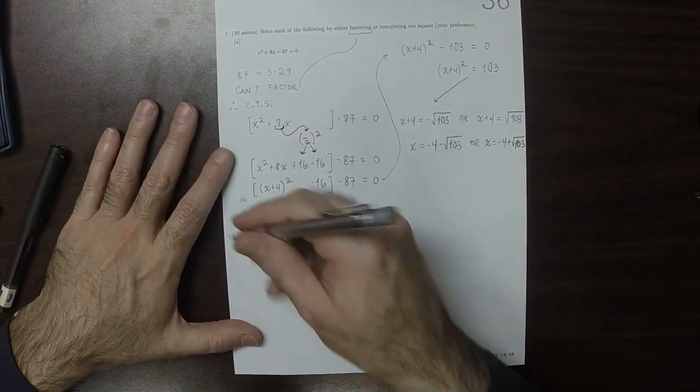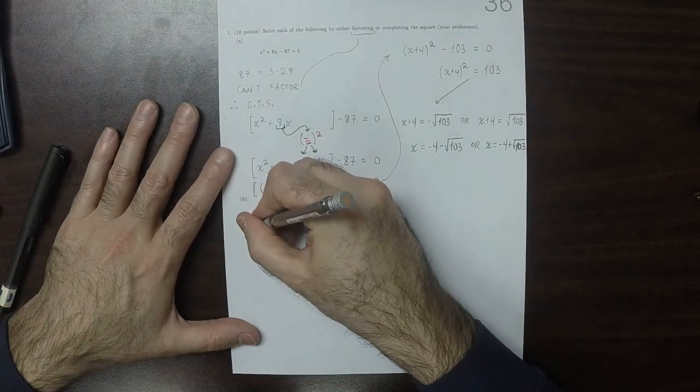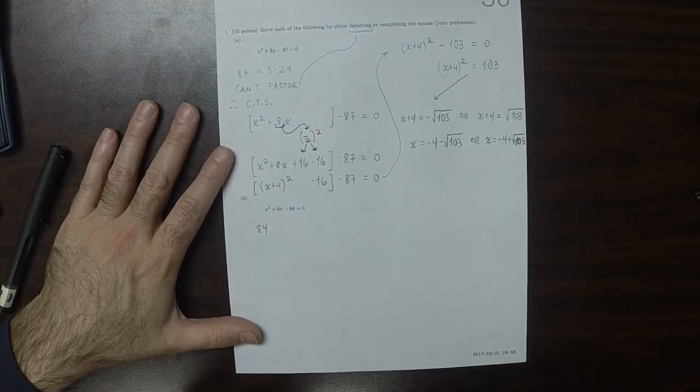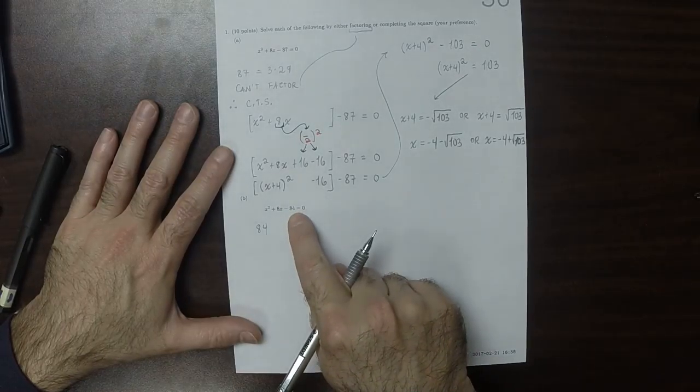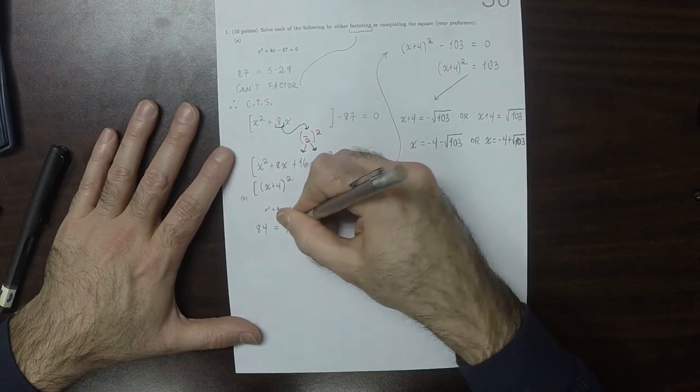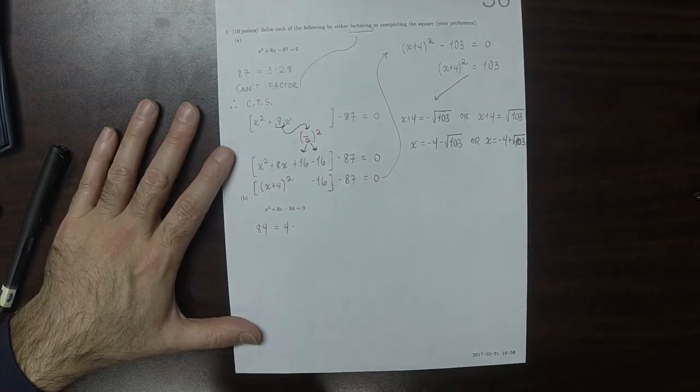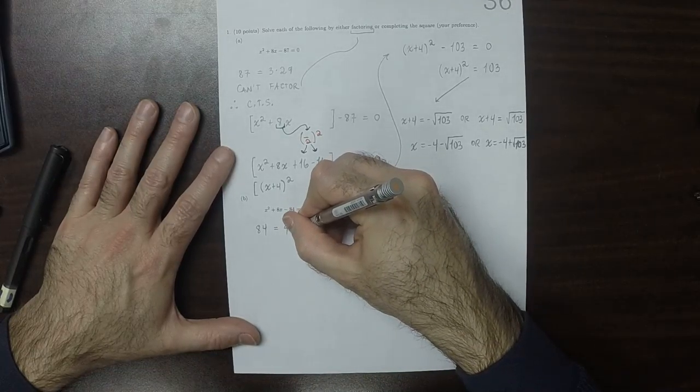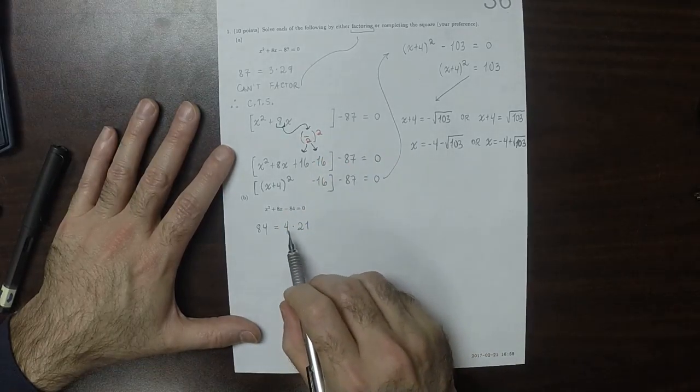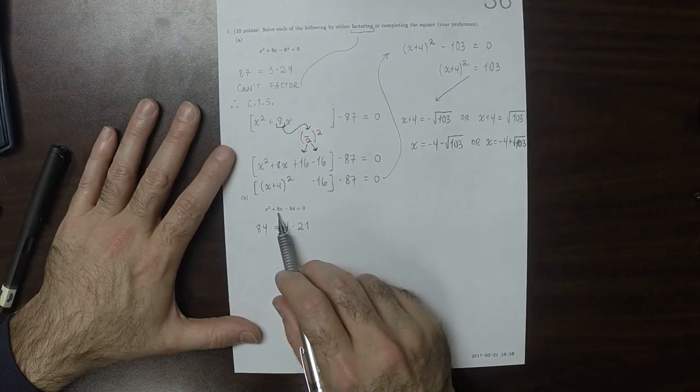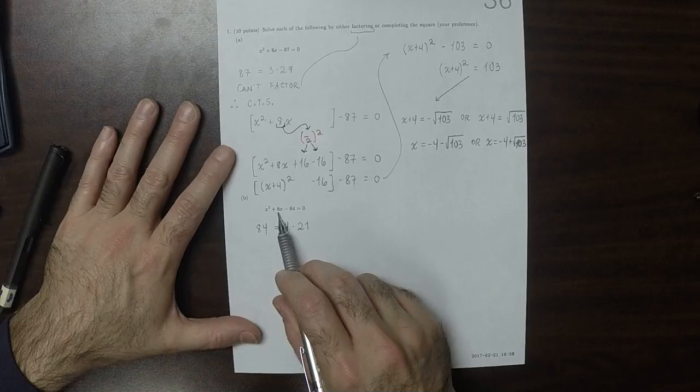So how about this one? 84. Does it factor? Yeah, it factors. It's divisible by 4. So it would be 4 times what? 4 times 21. So will 4 and 21 combine to make 8? No.